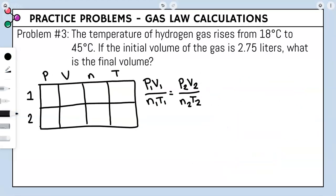Problem three: the temperature of hydrogen gas rises from 18°C to 45°C. If the initial volume is 2.75 liters, what is the final volume? We circle: 18°C is T1, 45°C is T2, 2.75 liters is V1, and we solve for V2.